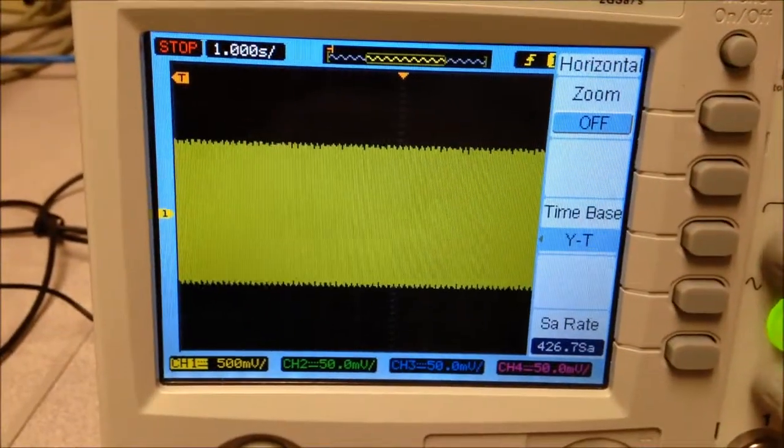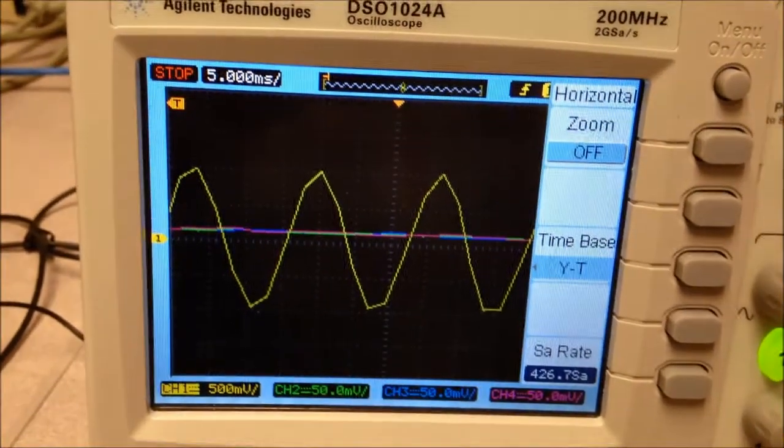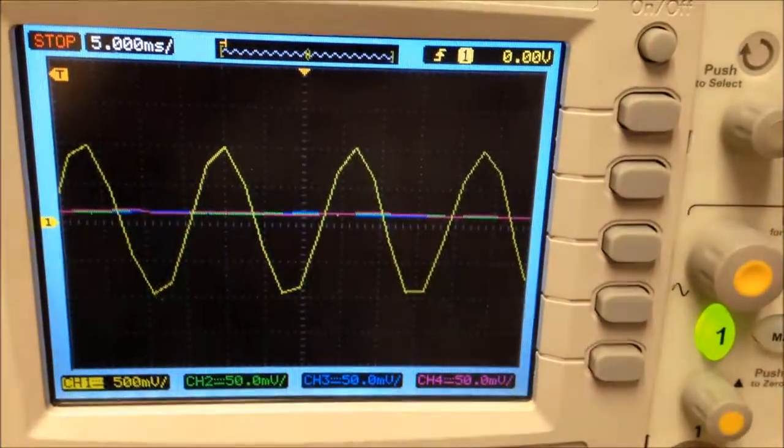All right, so now let's see the signal. I'm going to zoom in by moving times per division, and we're going to see a sine wave that is distorted because of the low sample rate. So we can see it's not a very good sine wave.